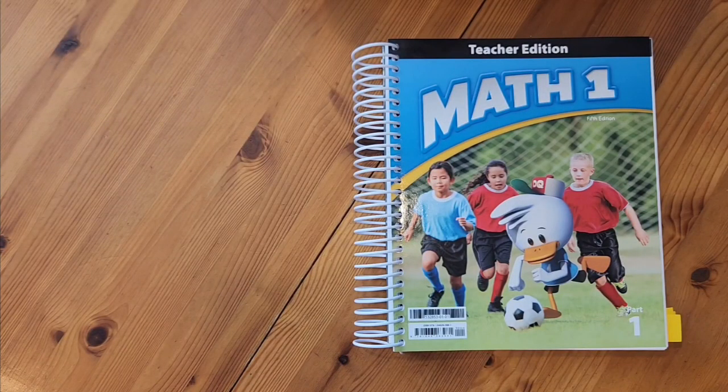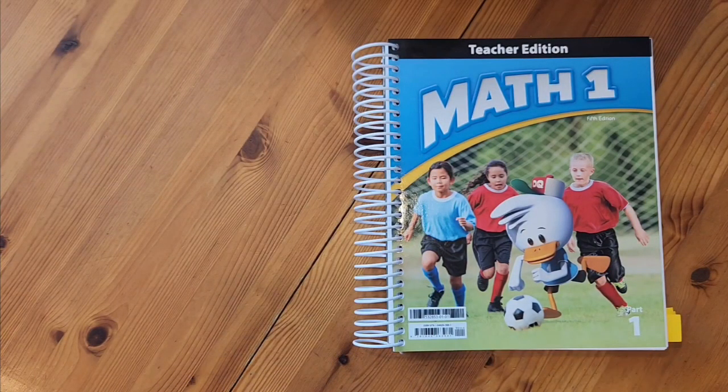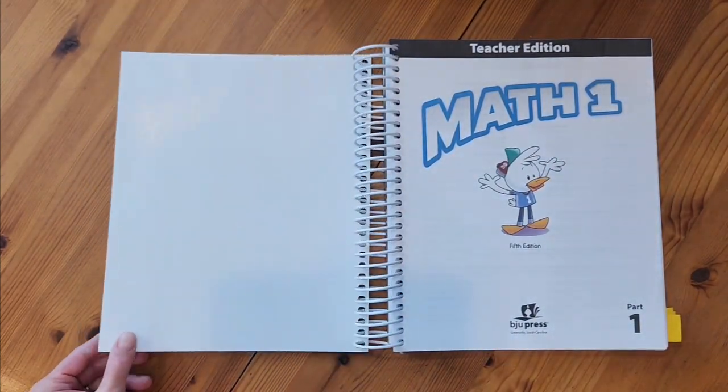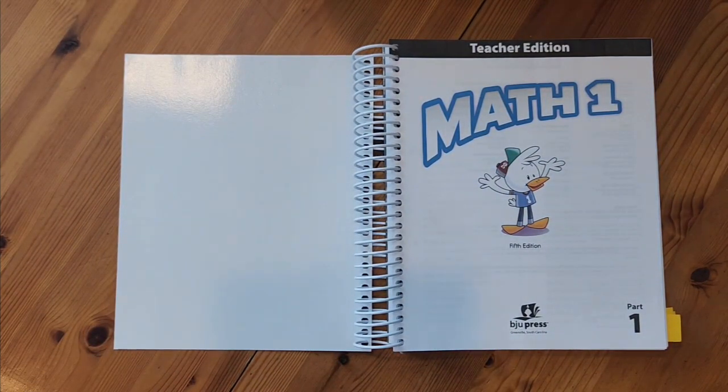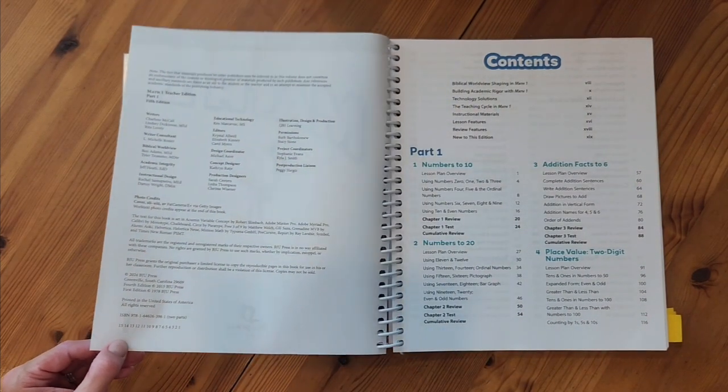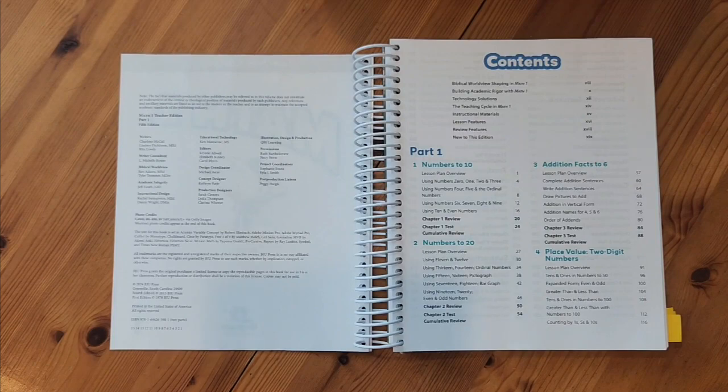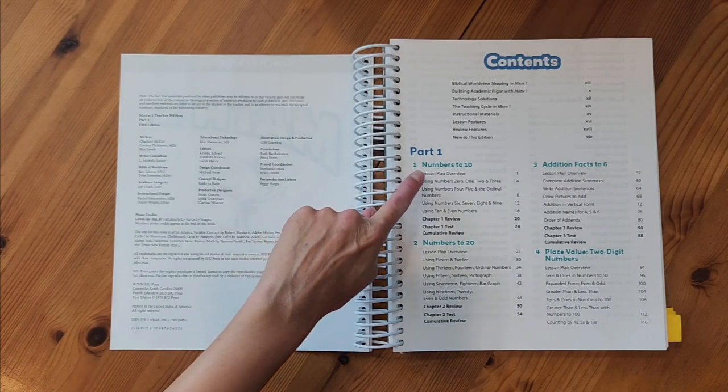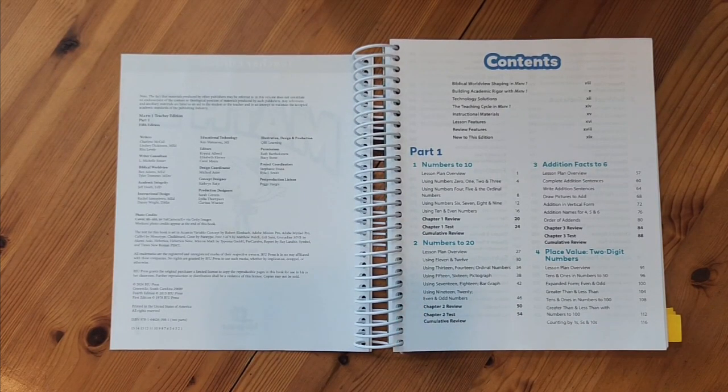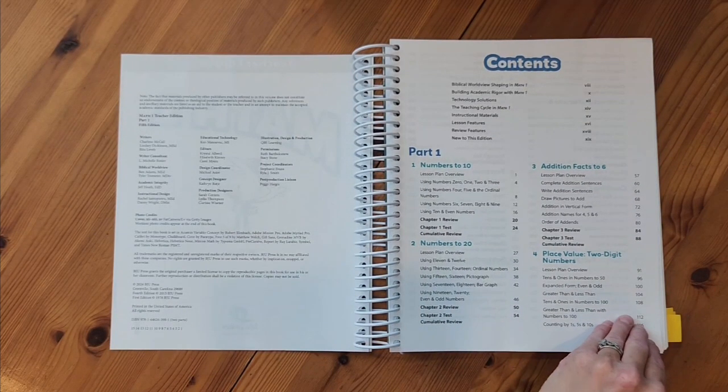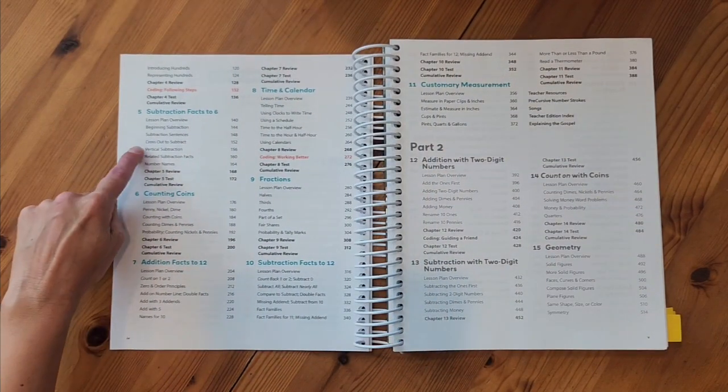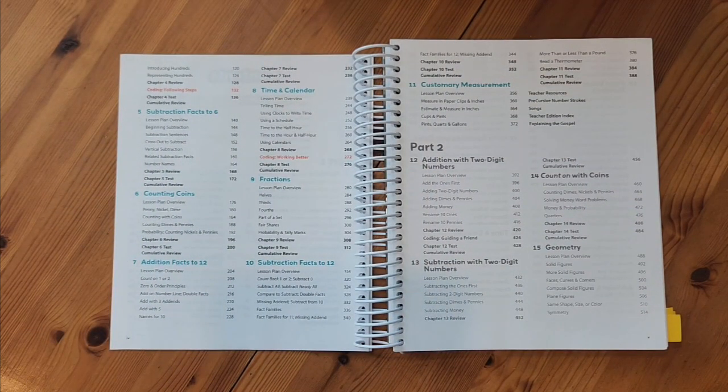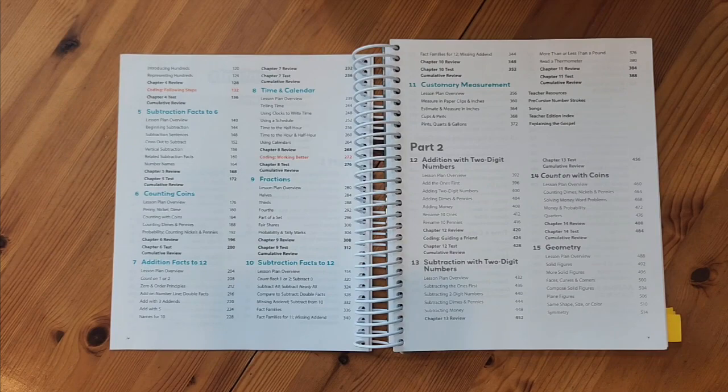Let's jump into the teacher edition for Math 1. We're in part 1 of the teacher edition book. Right at the beginning I see a picture of DQ. He's going to be a friend who joins us throughout Math 1 to help introduce new concepts. Part 1 will talk about numbers to 10, numbers to 20, addition facts to 6, place value two-digit numbers, subtraction facts to 6, counting coins, addition facts to 12, time and calendar, fractions, subtraction facts to 12, and customary measurement.